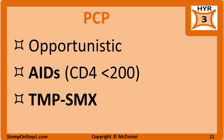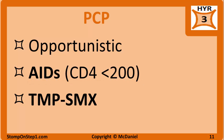Pneumocystis jirovecii is an opportunistic infection that primarily presents as Pneumocystis pneumonia (PCP) in patients with AIDS. PCP usually has diffuse, bilateral, interstitial infiltrates in patients with CD4 T-cell counts below 200. Once counts are below 200, AIDS patients should be given trimethoprim-sulfamethoxazole prophylaxis to prevent PCP. It was previously known as Pneumocystis carinii.